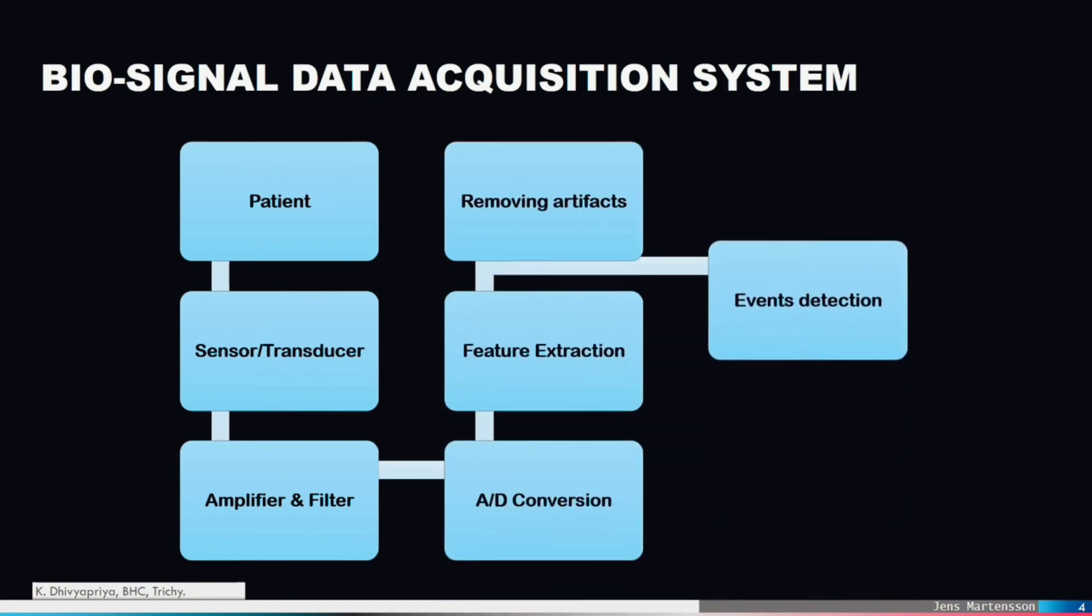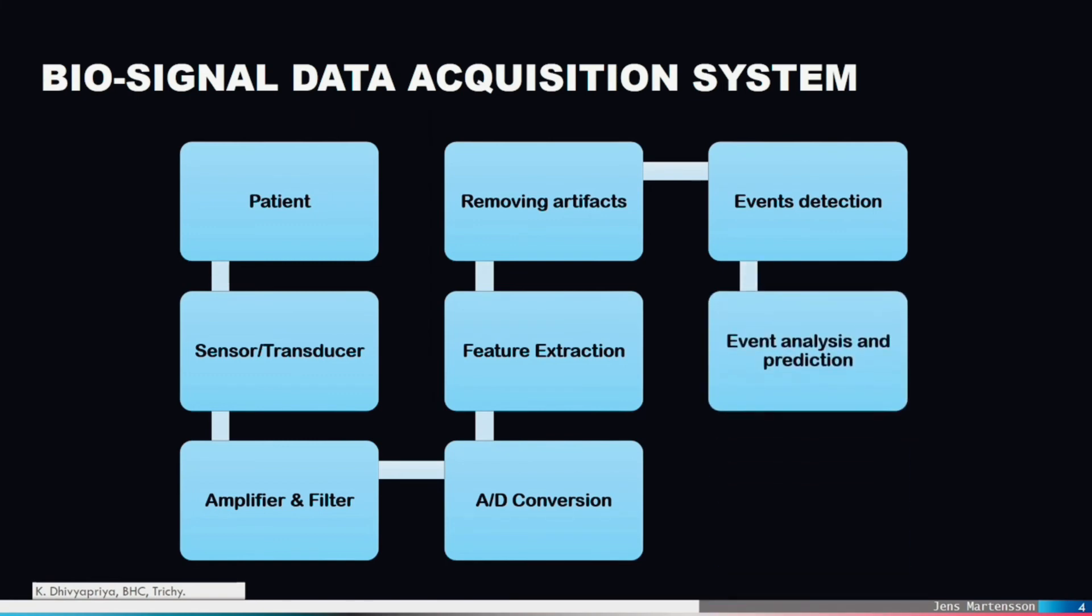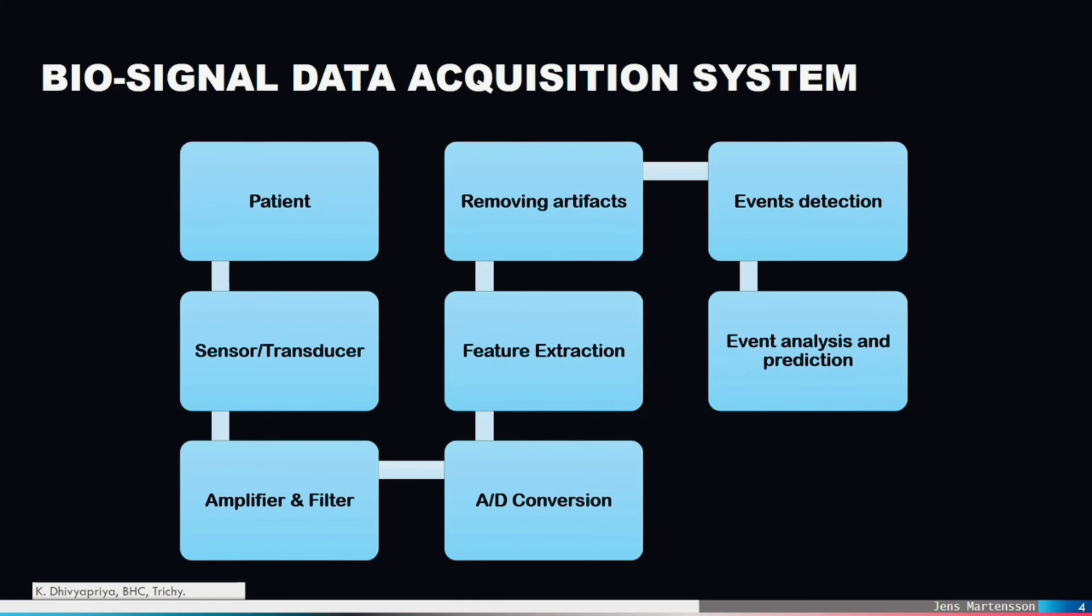The digital processing is applied on the digitized signal, which is mainly characterized as artifact removal methods and event detection methods. There are four different origins of artifacts which include physiological variability, environmental noise interference, transducer artifacts, and electrical noise.